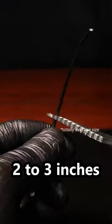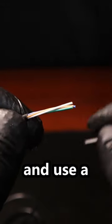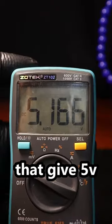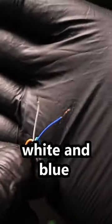First, cut off the cable and reserve about 2-3 inches. Strip a little bit off and use a multimeter to find a combination that gives 5 volts. In this case, white and blue.